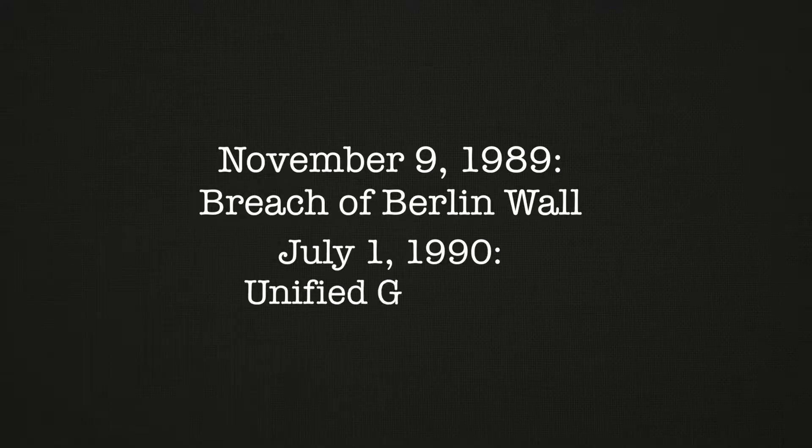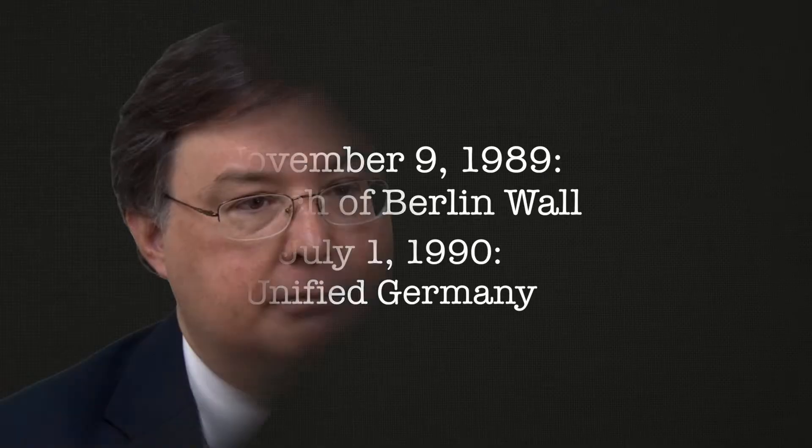Germany is especially important with the end of the Cold War. In 1989, we had the breach of the Berlin Wall on November 9th. After that, Germany quickly reunified — in fact, much more quickly than anyone expected. By July 1, 1990, there was a single German state rather than West Germany and East Germany.